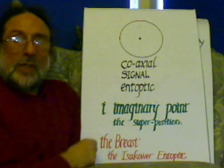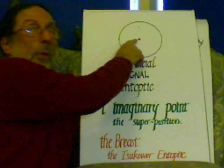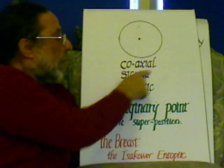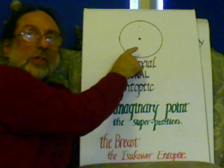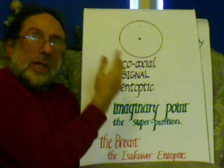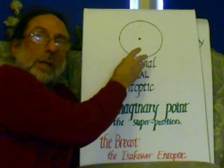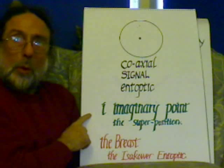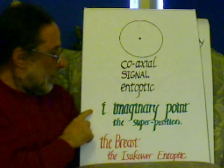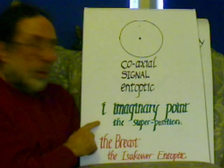It starts off with the Issachar Entoptic — the Breast Entoptic — which is the signal, the point of energy, which is the coaxial signal. So there's a signal coming in at this point: the dark energy. From that dark energy you can see light, and then the energy flows around and flows back around the coaxial core. And this point is a point in mind — the eye — the imaginary point, which is the superposition.